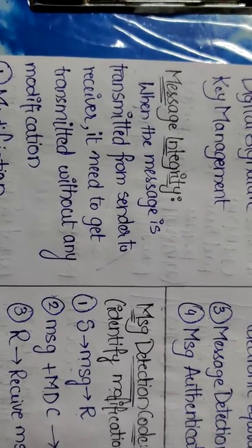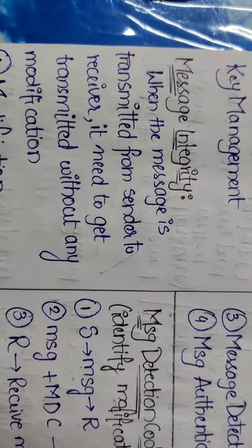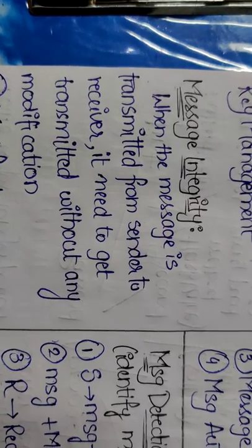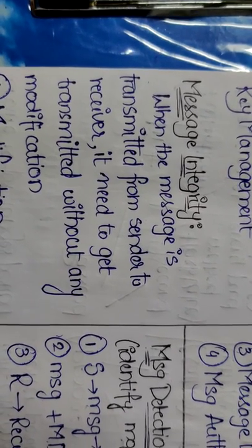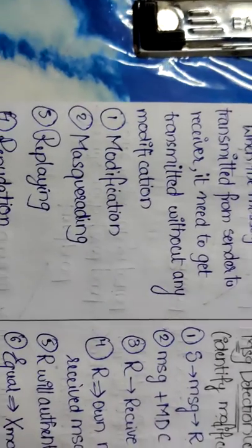First, Message Integrity. Message Integrity means when the message is transmitted from sender to receiver, it needs to get transmitted without any modification. Then it achieves integrity. Integrity means without being modified.